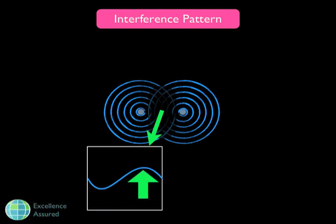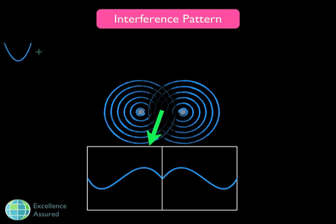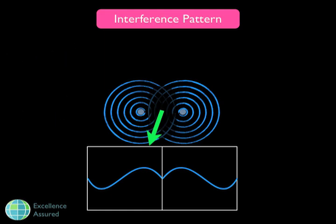You drop two pebbles into the lake, and the waves head off towards each other. And when they cross, you get what's called interference. When the peak of one wave and the peak of the other cross over, the height of the water is even greater — two peaks added together. Likewise, when a trough of one wave meets the trough of another, the depression in the water is even deeper. And then, when a peak of one wave crosses the trough of another, they actually cancel each other out — the peak tries to make the water go up while the trough tries to drag it down.